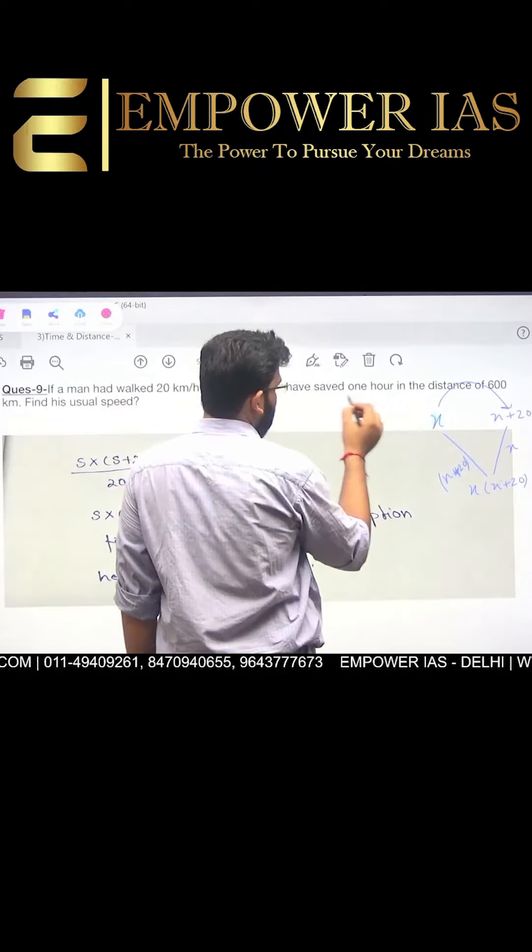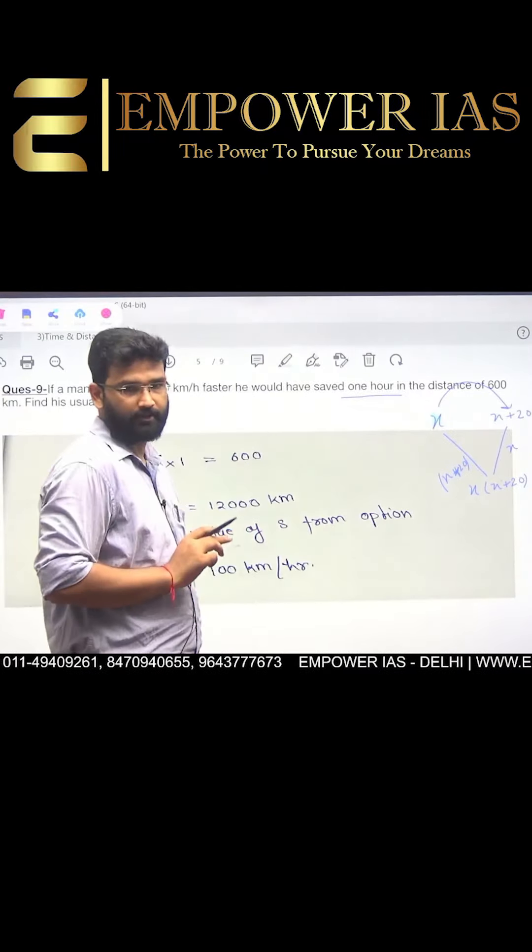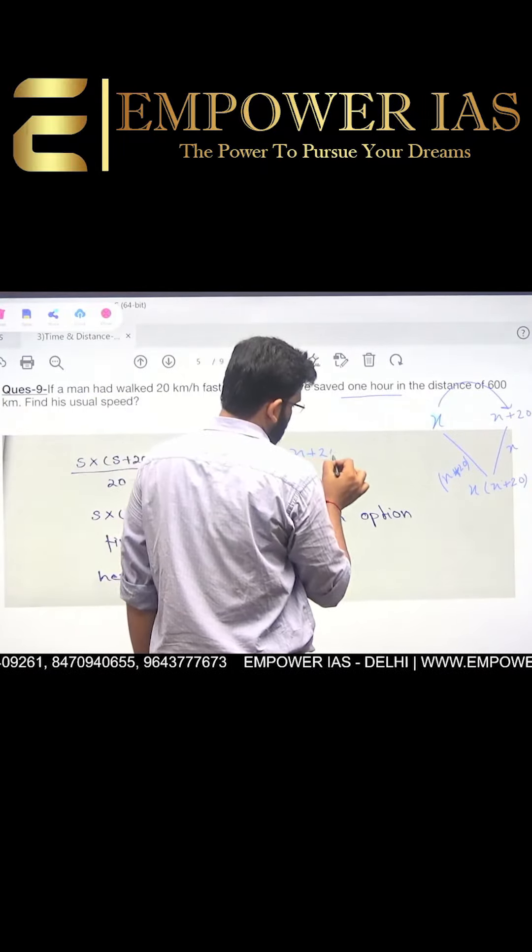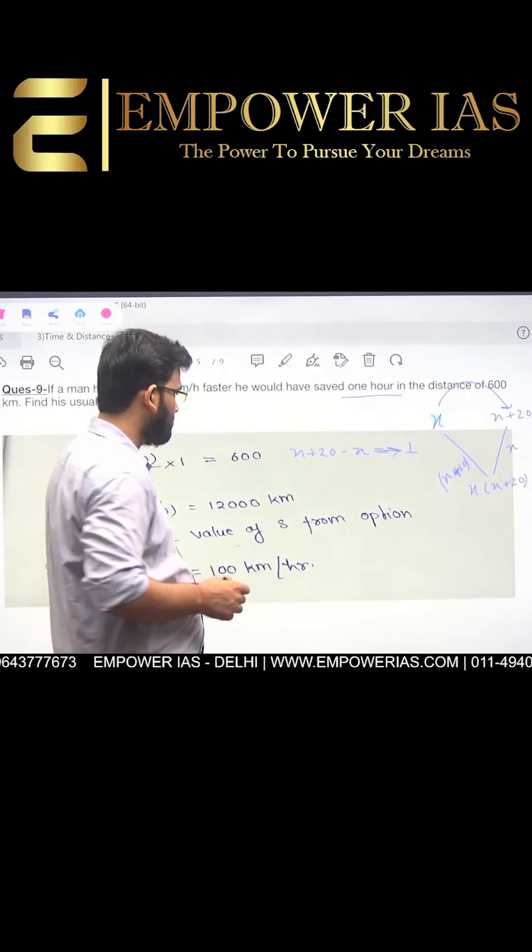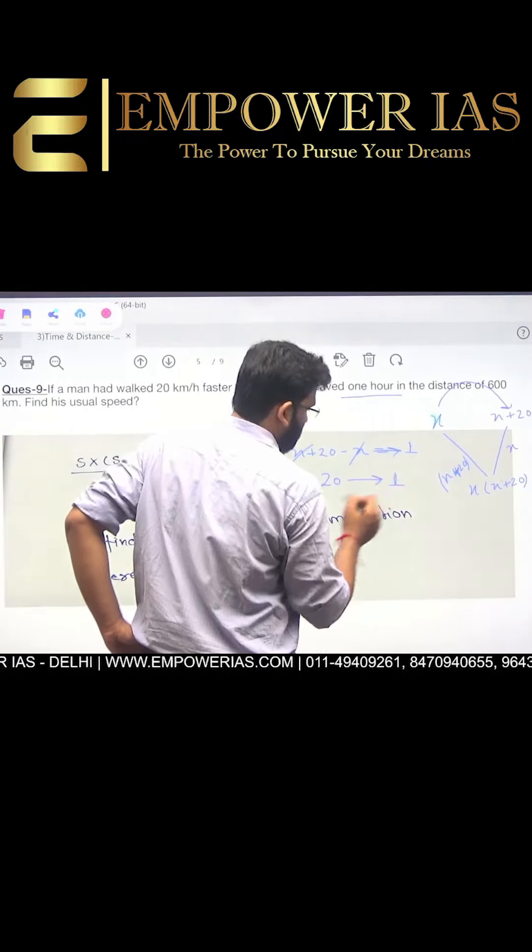It means that x plus 20 minus x is equal to one hour. Difference in the time is one hour. X cancels out, 20 is the answer.